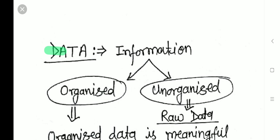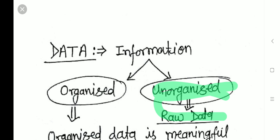So let us start this topic: the data. What is data? Data is a kind of information — the information we are gathering or collecting. Sometimes it is meaningful information, sometimes it is not meaningful. Generally, the data we collect that is unorganized is also known as raw data, while organized data is meaningful.